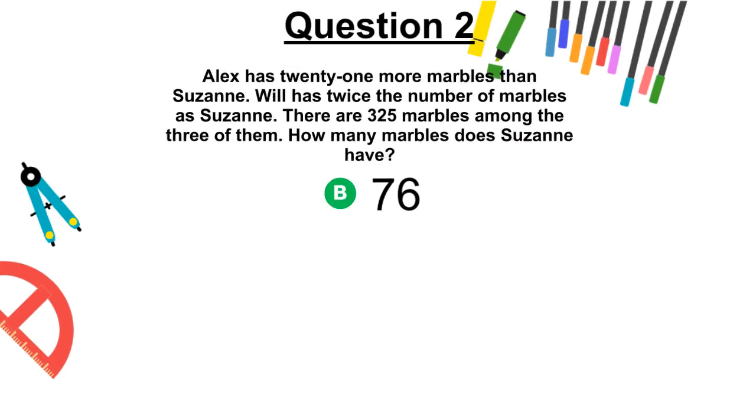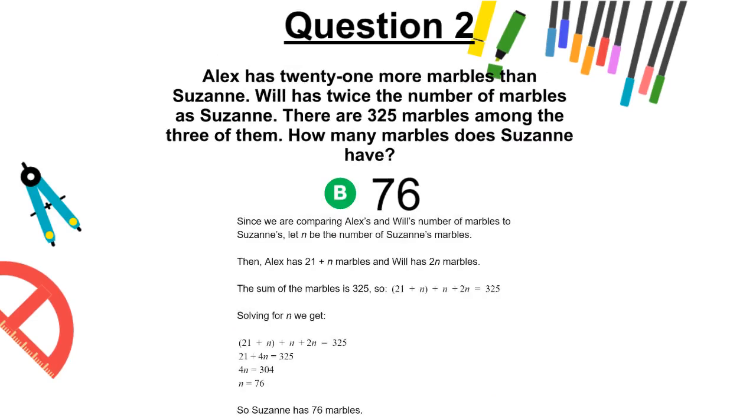The correct answer is B, 76. Since we are comparing Alex's and Will's number of marbles to Suzanne's, let n be the number of Suzanne's marbles. Then, Alex has 21 + n marbles and Will has 2n marbles. The sum of the marbles is 325. So, 21 + n + n + 2n = 325. Solving for n, we get the following.